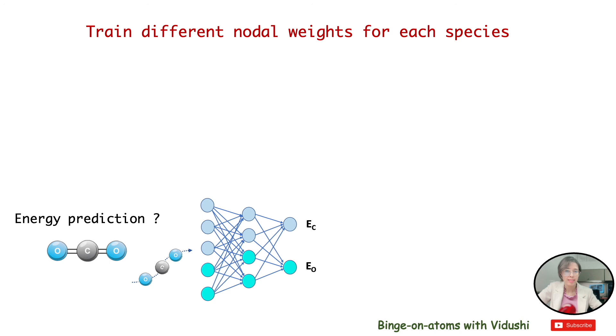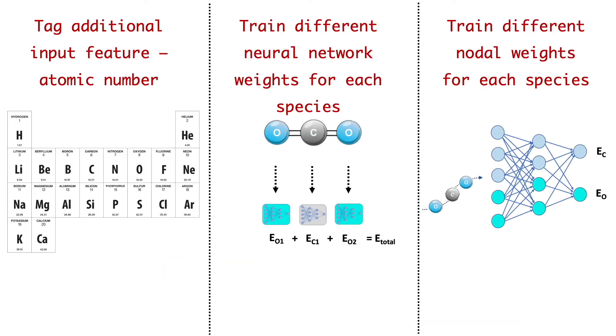However, this technique requires careful conceptualization and validation. So I summarized three different ways atom species are differentiated in deep neural network algorithms that exist in literature.